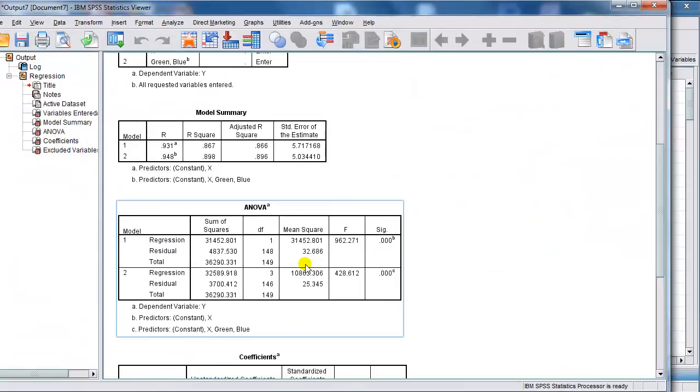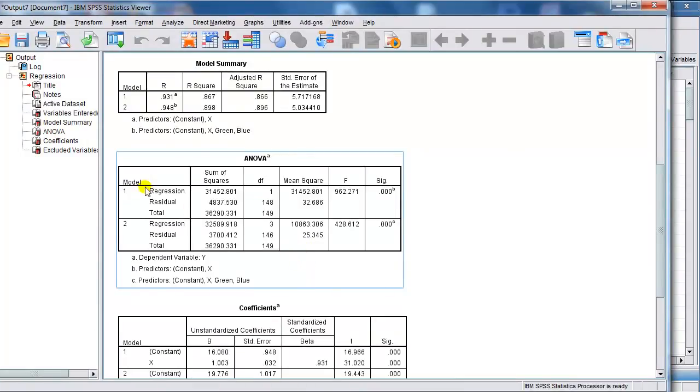Alright, so this produces two models. Model 1, what it calls model 1, is the reduced model, and model 2 is the full model. And for this ANOVA table, the RSS for model 1 is there, and the total degrees of freedom is 149. For model 2, the RSS is here, and the degrees of freedom is the same, 149.